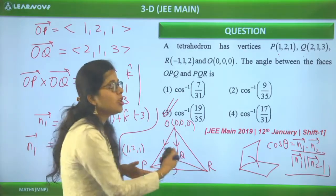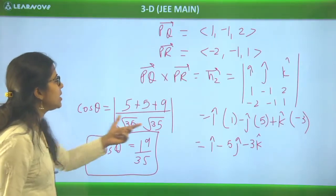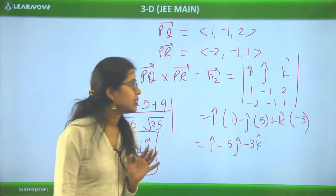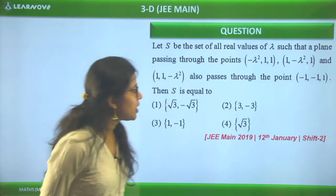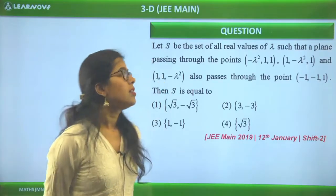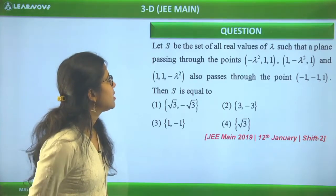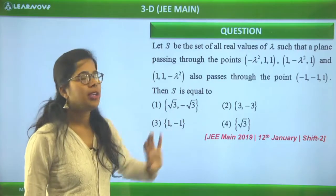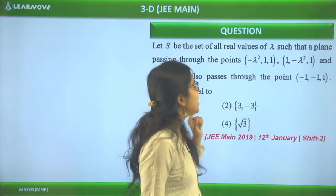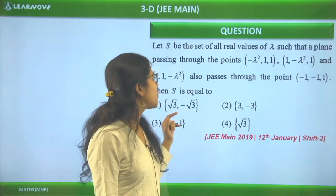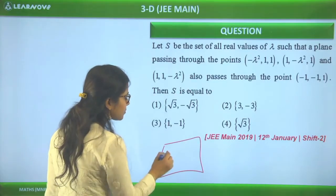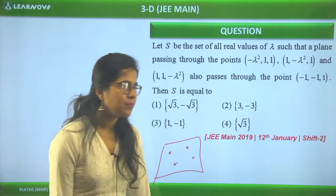This question is conceptually straightforward but computation-heavy since you need to compute two cross products and then the dot product. The approach is: identify the planes as faces of the tetrahedron, find their normal vectors using cross products, then apply the angle between planes formula.